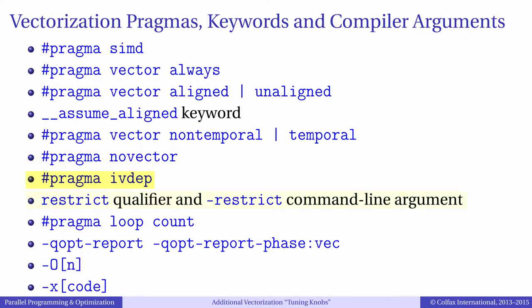Pragma IfDep and the restrict qualifier allow pointer disambiguation. When they are used, the compiler may work assuming that there are no vector dependencies between pointer-based data in the loop. Pragma Loop Count is a compiler hint that tells the compiler that at runtime the loop count can be expected to be equal to something, or be greater or smaller than some threshold. This may allow the compiler to choose its vectorization strategy optimally.